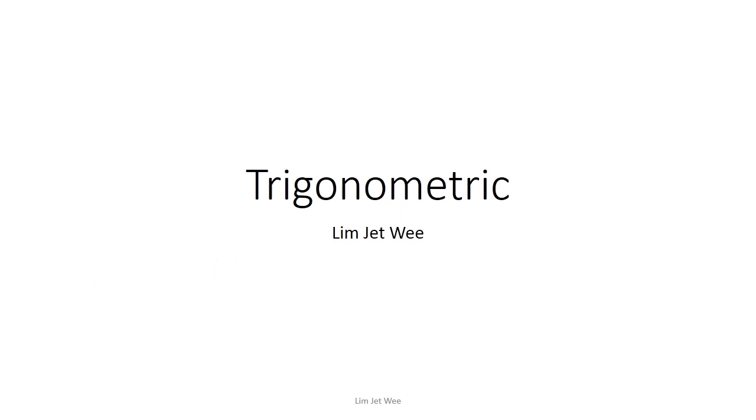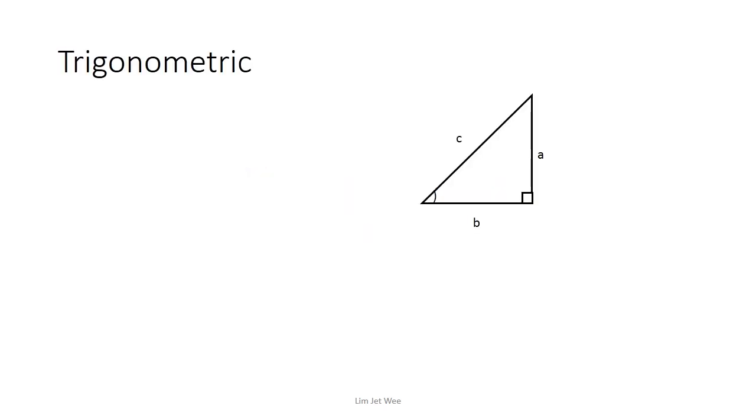Let's take a look at trigonometry. If I have a triangle like this with a right angle and of course an angle here, and I label all these sides as a, b, and c, then based